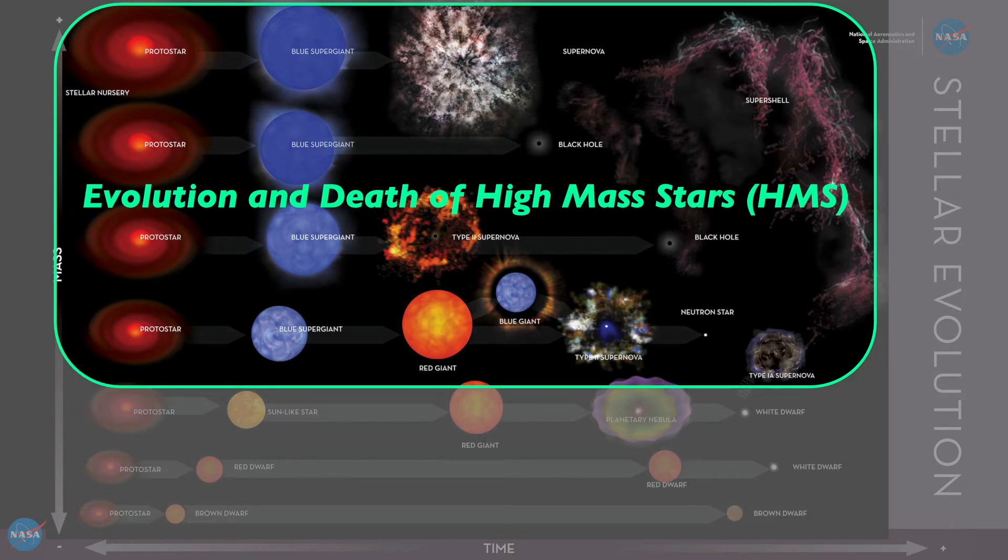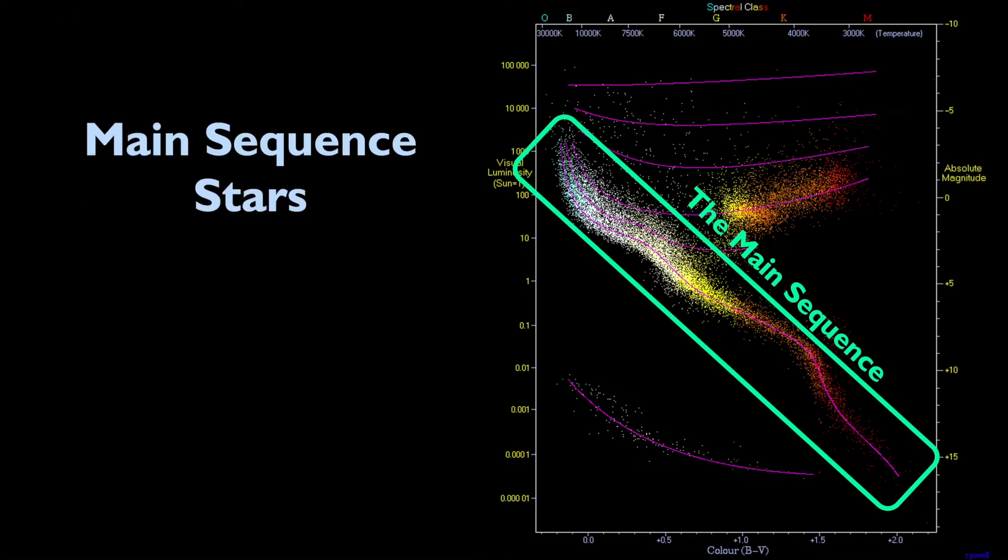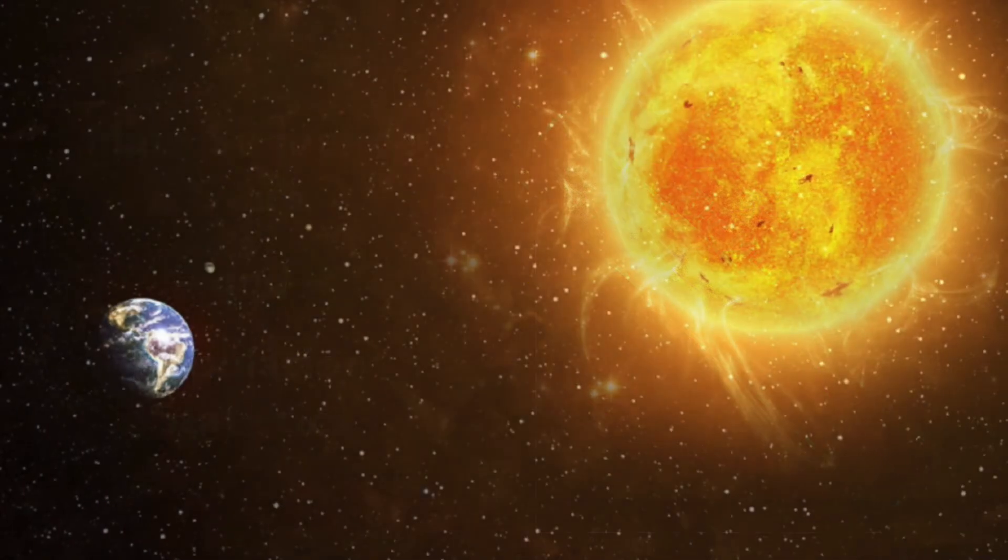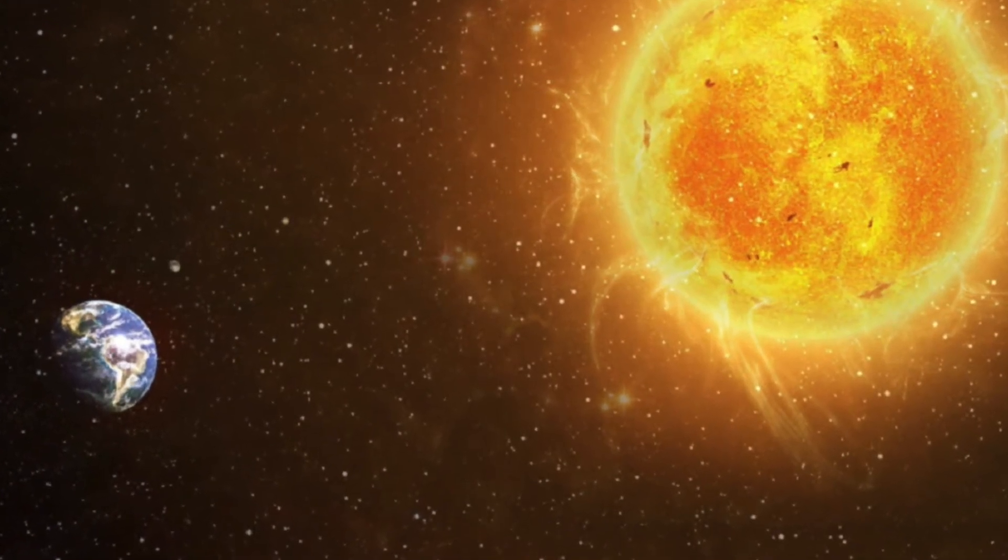But before getting into all that, we'll first look at the stars of the main sequence and try to get a better understanding of the statistics of these stars. For example, how many of these main sequence stars are like our sun?